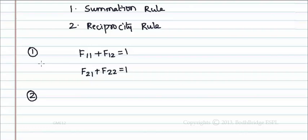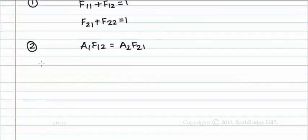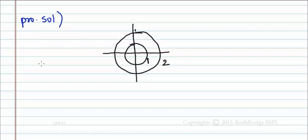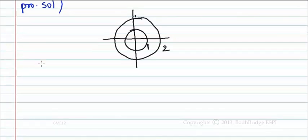Now let us come to our problem. In the problem, tube 1 and tube 2 are concentric and we can see f11 equals 0, since the radiation emitting from the first surface cannot fall on the first surface itself. So substitute this value in the summation rule.